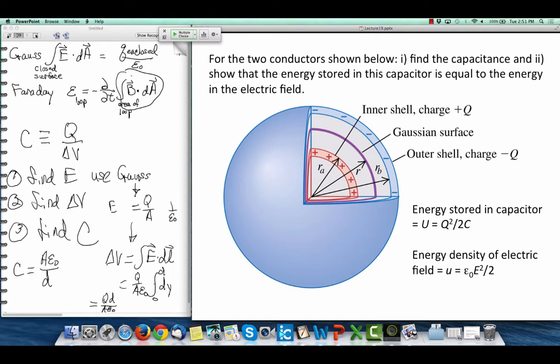What's the delta v, the difference in voltage between those two spheres? How do I find the difference in voltage? First I find the electric field in between those two spheres, and then I integrate the electric field from one sphere to the other.